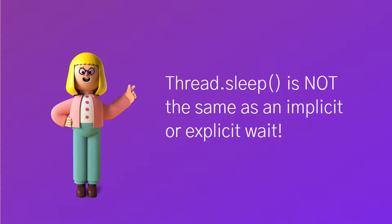In an implicit or explicit wait, we're specifying how long we want to wait for a given element or a given condition to be present. So let's say that we're using an explicit wait and we're willing to wait up to 10 seconds for a given element to be displayed on the screen. If the element shows up after 2 seconds, then the test will continue execution — it will not pause for the entire 10 seconds. It will do so as soon as the condition is met.